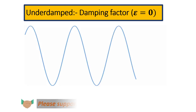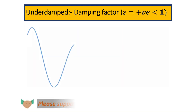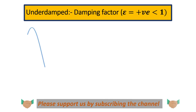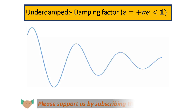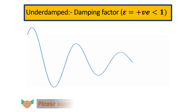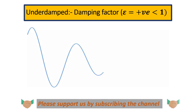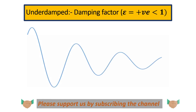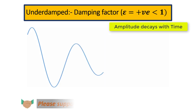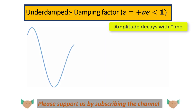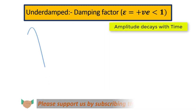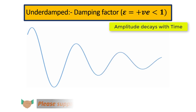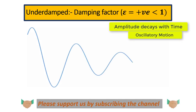The next case is when the damping factor is positive but smaller than one. Looking at the plot, we can see that the amplitude of the motion is continuously decreasing with time. The system is trying to approach its initial equilibrium position — that is, approaching a value of zero. The motion is oscillatory and periodic.